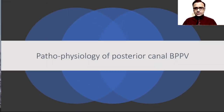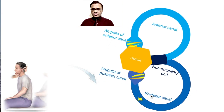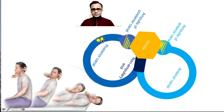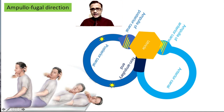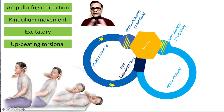Now let us look at the pathophysiology of benign paroxysmal positional vertigo. I have chosen the example of posterior canal BPPV because that is the most common form. In typical posterior canal BPPV, the otolith is located towards the ampullary side of the canal. When we bring about the Dix-Hallpike position — head-low position on the affected side — the canal drops down, causing ampullofugal movement of the endolymph. Because of this ampullofugal movement, the kinocilium moves towards the excitatory side, which is excitatory in the posterior canal, and excitation of the posterior canal leads to upbeating torsional nystagmus.